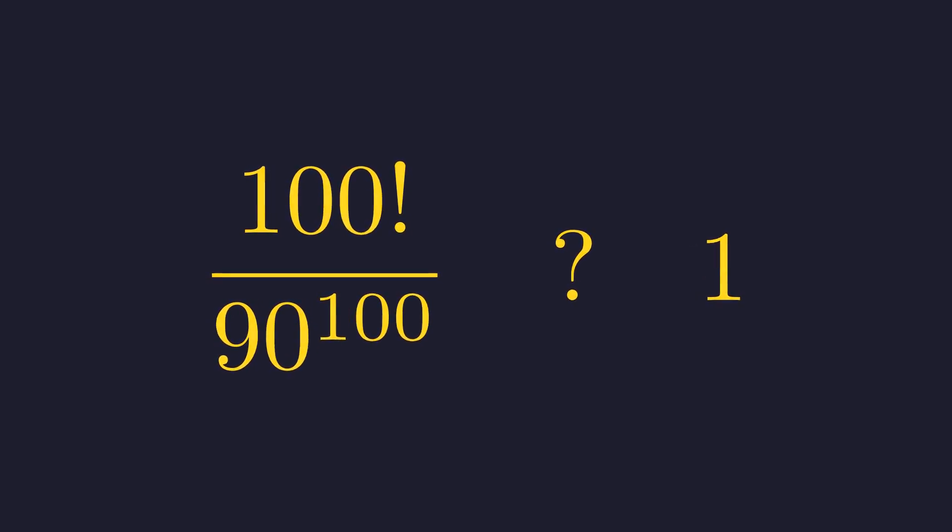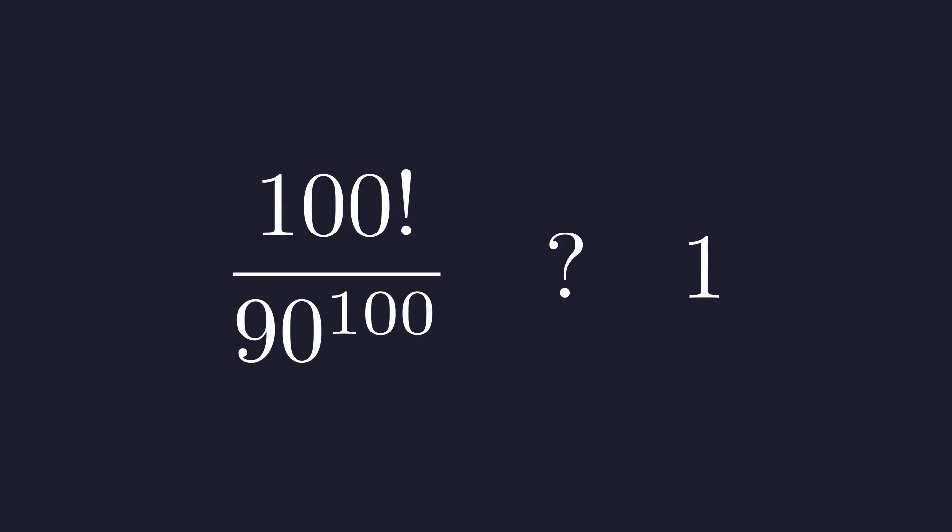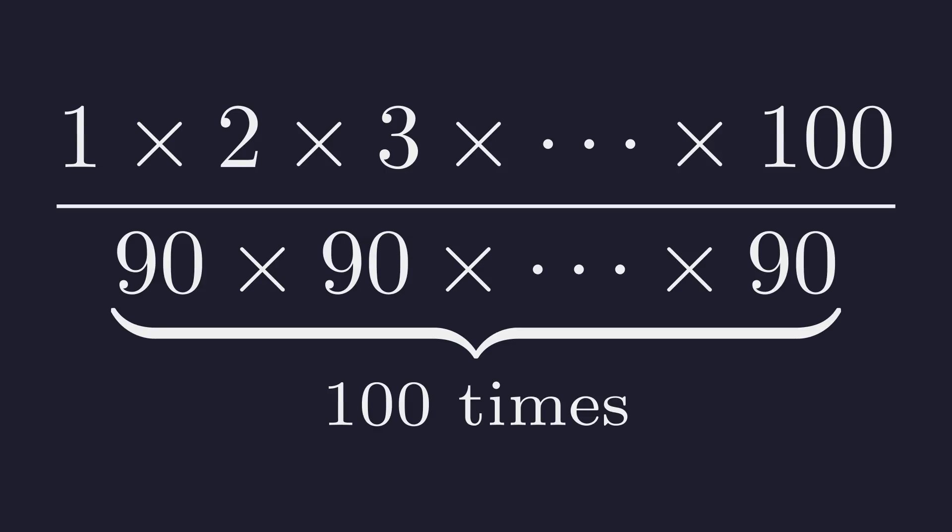To analyze this, let's expand both the numerator and the denominator. The numerator is the product of integers from 1 to 100, and the denominator is 100 copies of 90.